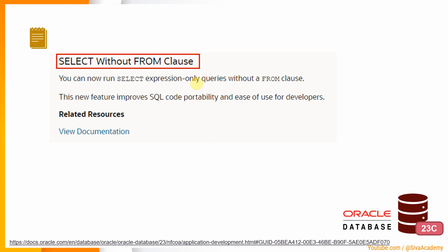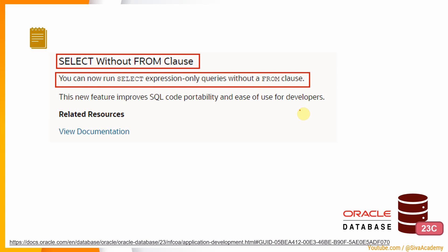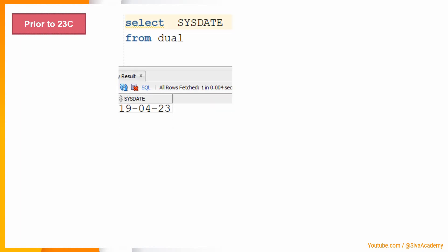Here is a snippet of documentation from Oracle 23c: you can now run SELECT expression-only queries without a FROM clause. Before jumping into the examples from 23c, let us quickly check an example from a previous version so that we will understand why the FROM clause is mandatory till the previous version. The minimum SELECT statement must have mandatorily two clauses — a SELECT and a FROM clause.